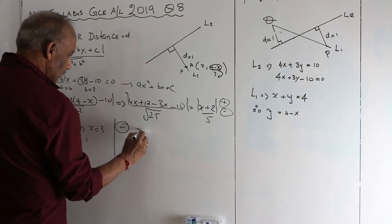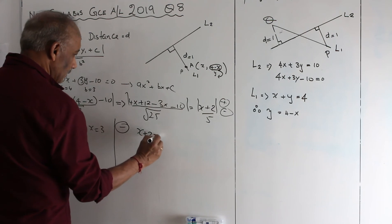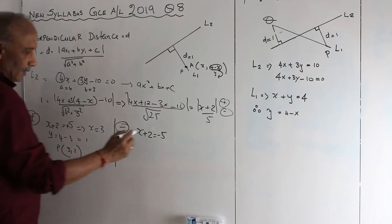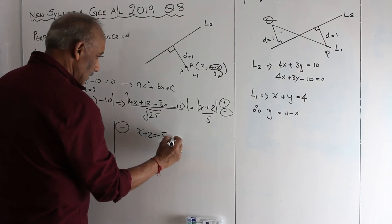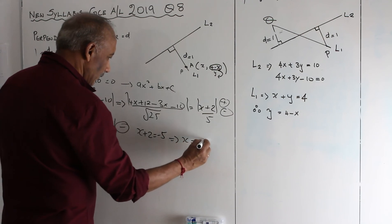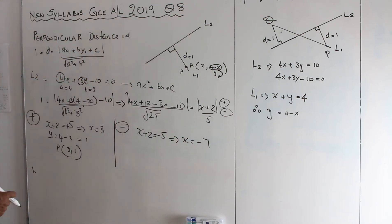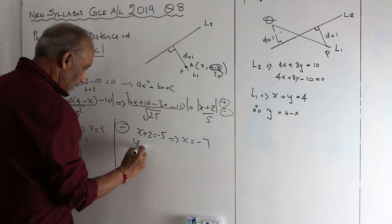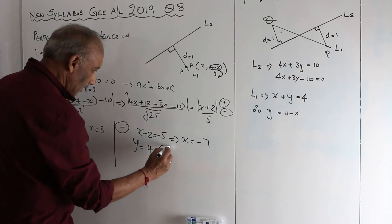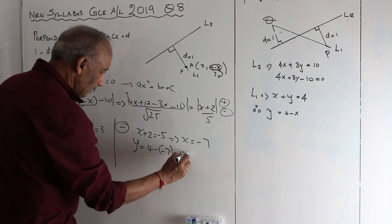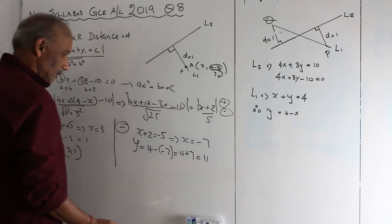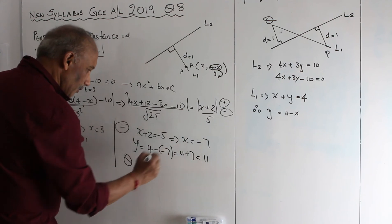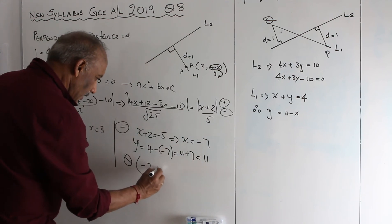So X is equal to minus 7. Where Y is equal to 4 minus X. So Y equal to 4 minus (minus 7) — 4 plus 7 is going to be 11. It is on Q level. Therefore, Q value is minus 7 and 11.